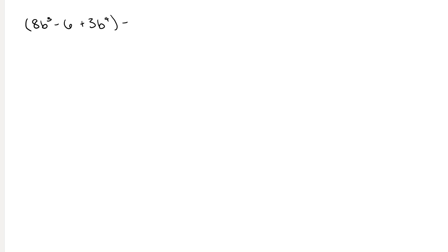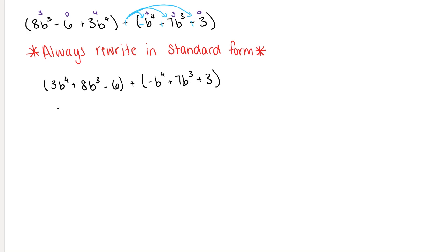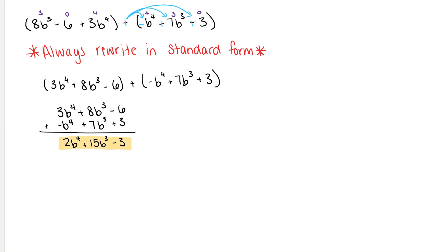Let's look at another example: 8b to the 3rd minus 6 plus 3b to the 4th, minus b to the 4th minus 7b to the 3rd minus 3. After distributing the minus sign and rewriting in standard form, we get 3b to the 4th plus 8b to the 3rd minus 6, plus negative b to the 4th plus 7b to the 3rd plus 3. Stacking and adding down gives 2b to the 4th plus 15b to the 3rd minus 3.